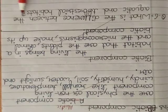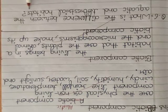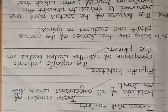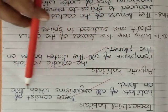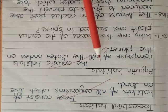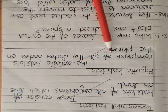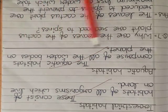What is the difference between the aquatic and terrestrial habitat? Terrestrial habitat. These consist of habitat of all organisms which live on land. Aquatic habitat. The aquatic habitat comprise of all the water bodies on the planet.